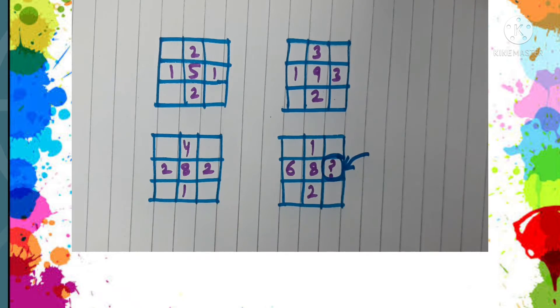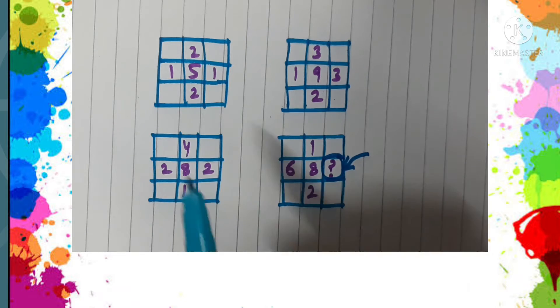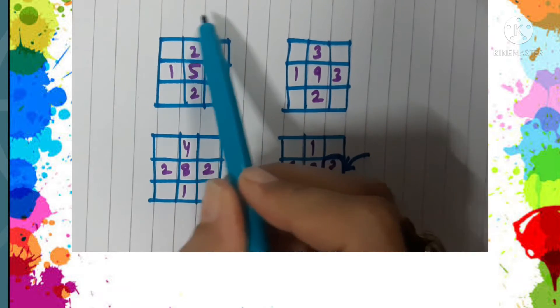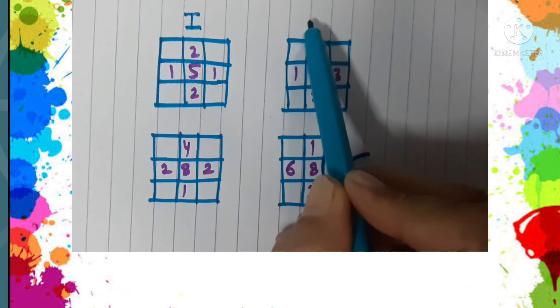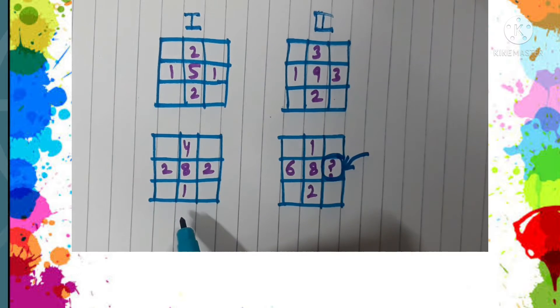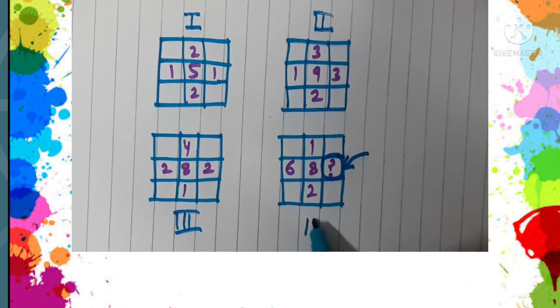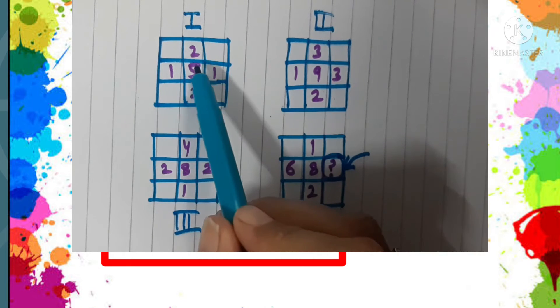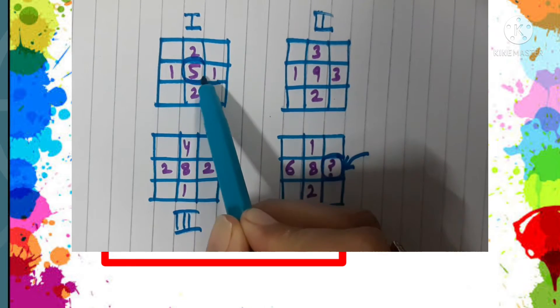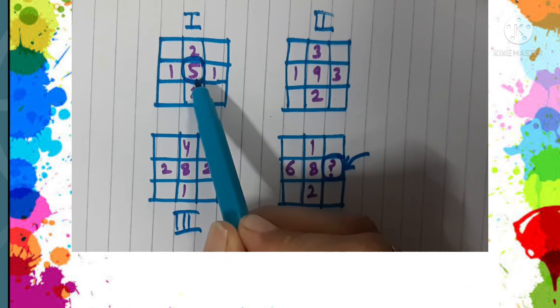Let us see the pattern. I'm going to name these boxes as one, two, three, and four. Let us see box number one and observe this center number. The number in the center is five.